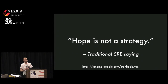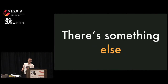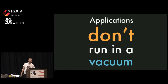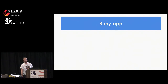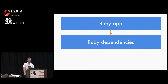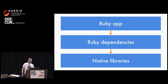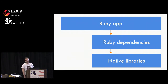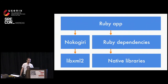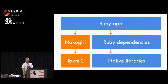And there's something else: applications don't run in a vacuum. Say you've got your Ruby app with some libraries written in Ruby that you depend on, and in turn those depend on some native dependencies on the machine. A concrete example is Nokogiri, which depends on LibXML2. Nokogiri is a Ruby library for working with XML documents, and it binds into the native C library LibXML2, which is present on a lot of systems. Both of these things need to be installed for your Ruby app to work.